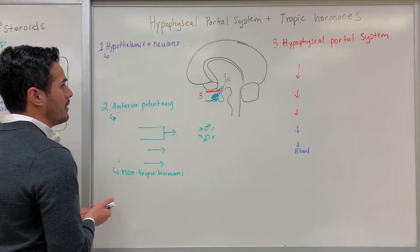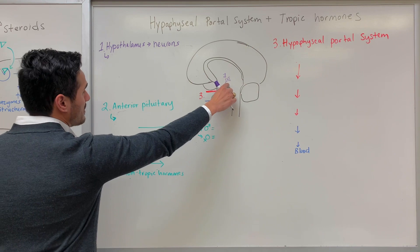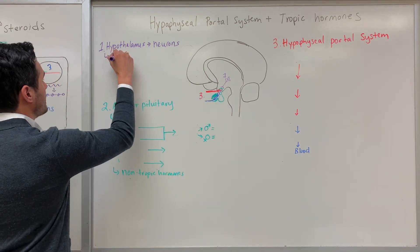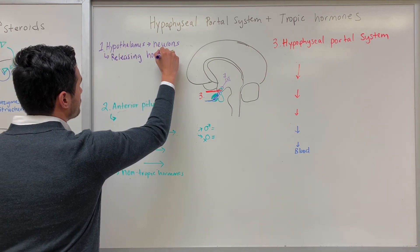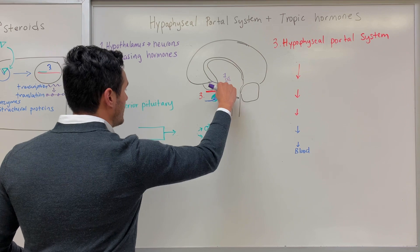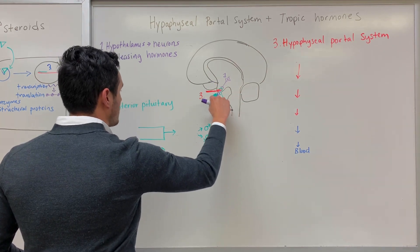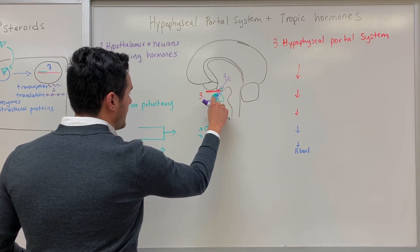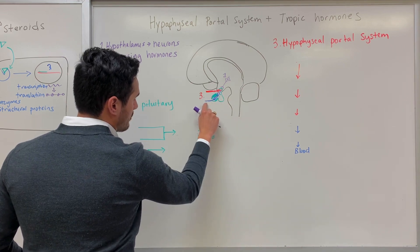Within the hypothalamus we have hypothalamic neurons, and within these neurons is where releasing hormones are synthesized. These releasing hormones travel along the axon of the neuron and get into the portal system. Once in the portal system, they're transported to the anterior pituitary, where tropic hormones can then get into the blood through this venule.